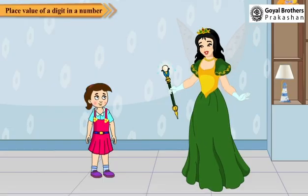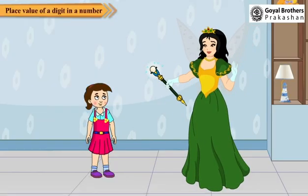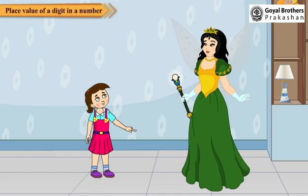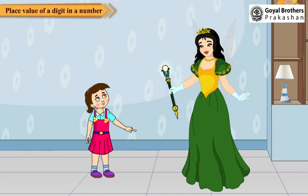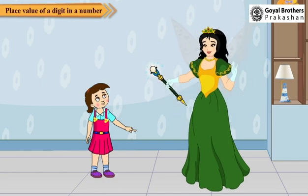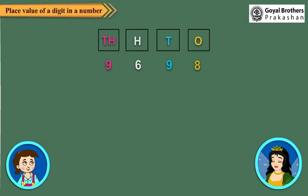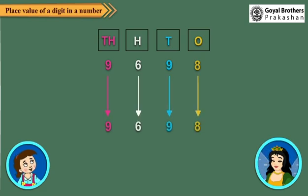Neha, did you know about face value? No, Tina. I don't know. Okay, Neha, I will tell you. The value of the individual digit is called its face value. And always remember, face value is the same as the digit itself. For example, in the numeral 9698, the face value is represented as each digit's own value. Wow! Good! It is easy!